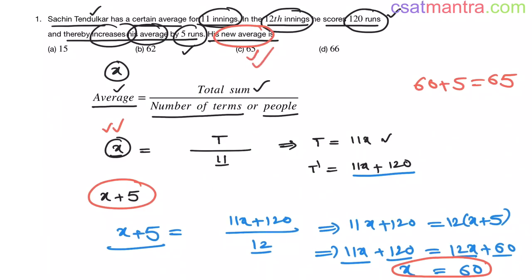So our answer is C. There are no complex formulas or complex concepts involved my friends. I just wrote the given information in the form of equation and then I solved the equation. Only one formula: average is total sum by number of terms or number of people.